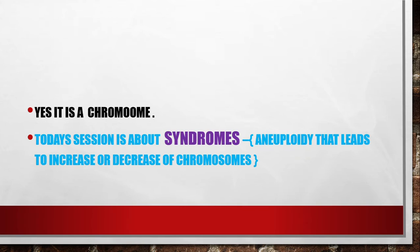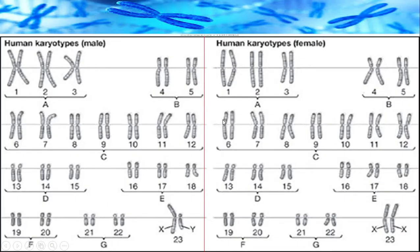What happens if the chromosome number becomes 47 or 45? Here you see two pictures: the first is the karyotype of a human male and the second is a karyotype of a human female. A karyotype is the systematic arrangement of chromosomes from the longest to the shortest. In the male karyotype, the 23rd pair shows X and Y chromosomes of different sizes, indicating that X and Y are not homologous to each other and do not carry the same kinds of alleles.